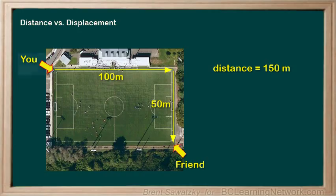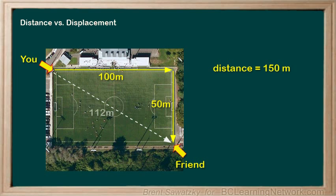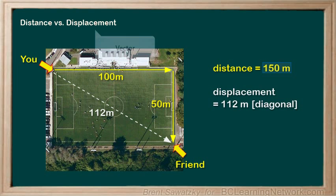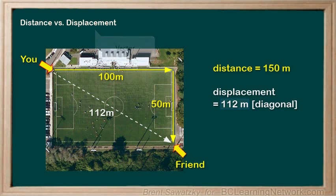On the other hand, the displacement is from your starting point directly to your ending point. The vector arrow would look like this. We would say that the displacement is 112 meters diagonally across the field. Distance is scalar and just has magnitude — 150 meters — but displacement is a vector: it has both magnitude and direction.